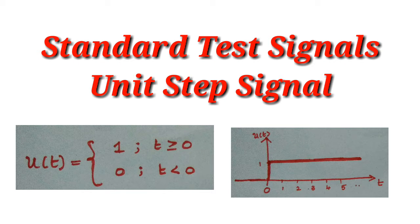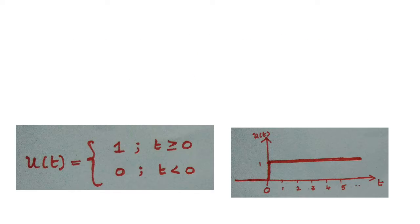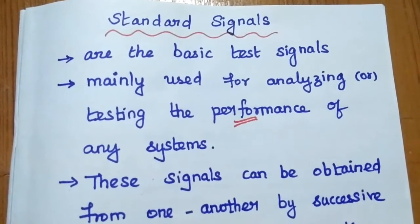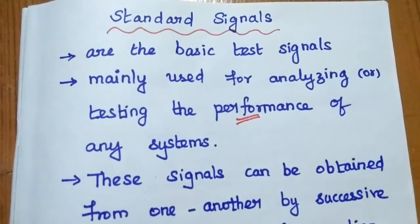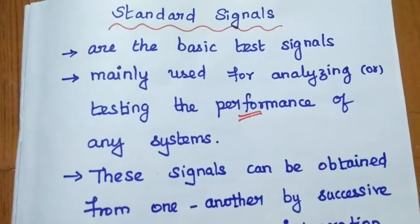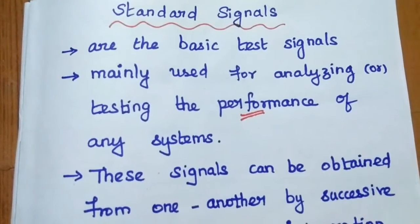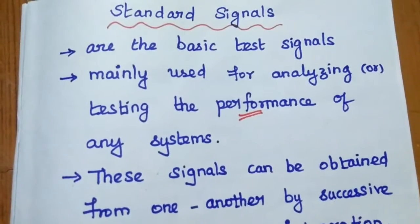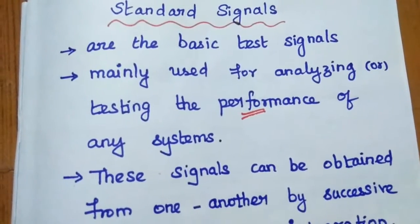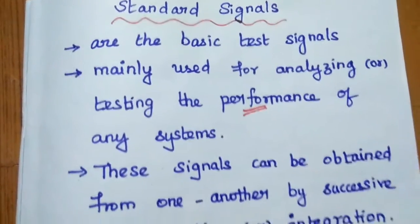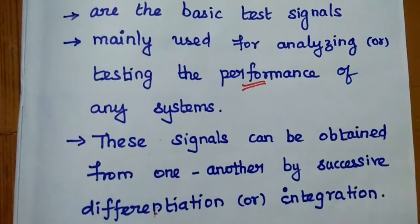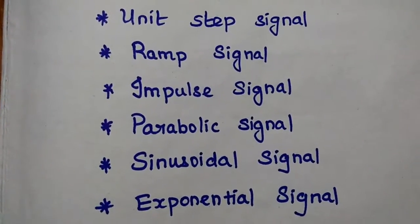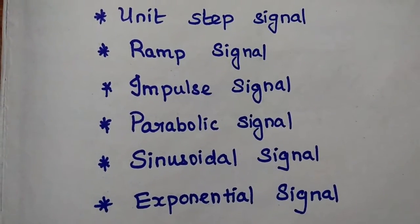Now we are going to discuss about unit step signal and its properties. Standard signals are also called as basic test signals. These signals are mainly used for analyzing or testing the performance or the behavior of any system. After constructing any electrical or electronic systems, we need to test it whether it is working in a right way or not. So for that, we have to use some standard input signals, called test signals. These test signals can be obtained from one another by successive differentiation or integration.